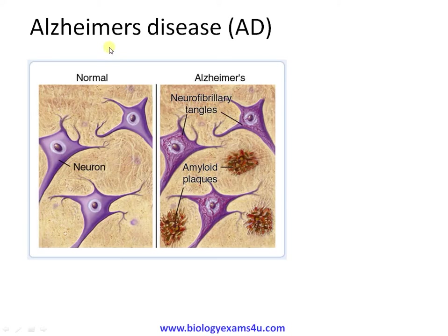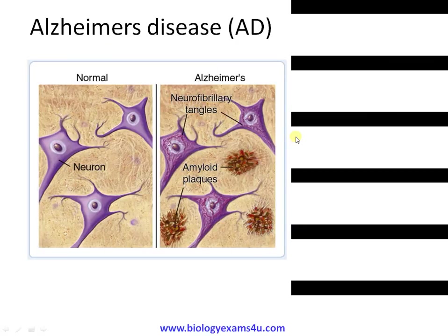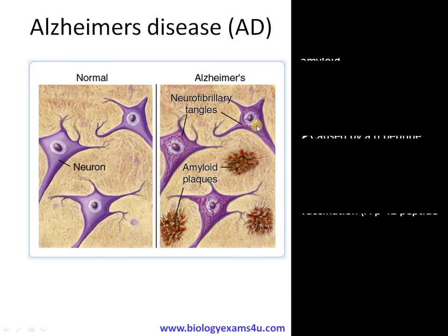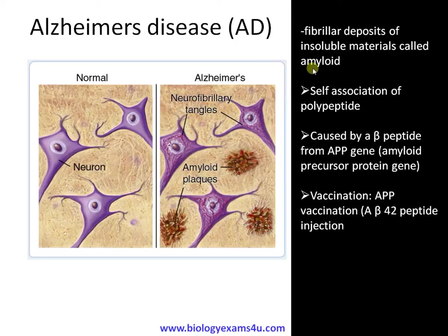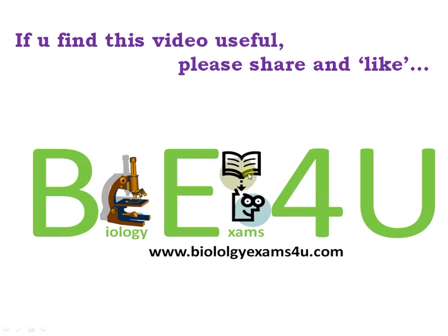Another common disease associated with protein folding is Alzheimer's disease. It is caused by the deposition of proteins called amyloids — also a protein folding disorder caused by beta-amyloid peptide formation from the amyloid precursor protein gene. These deposits accumulate inside neurons, making it difficult for them to convey signals. Thank you so much for watching — you are with biologyexams4u.com.